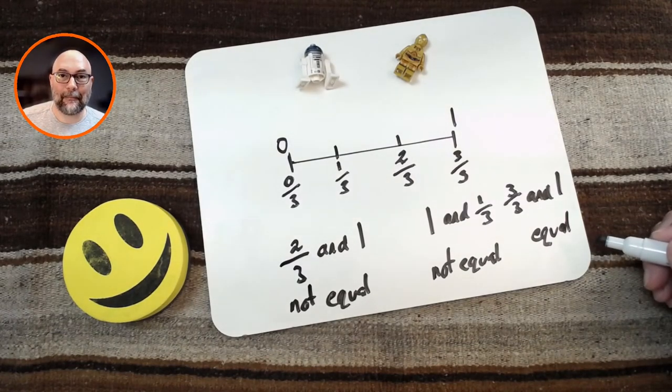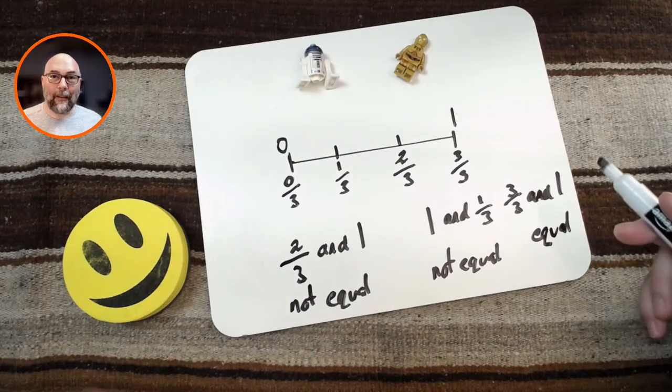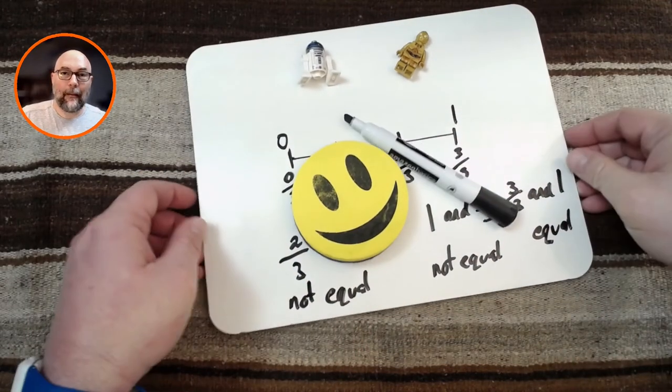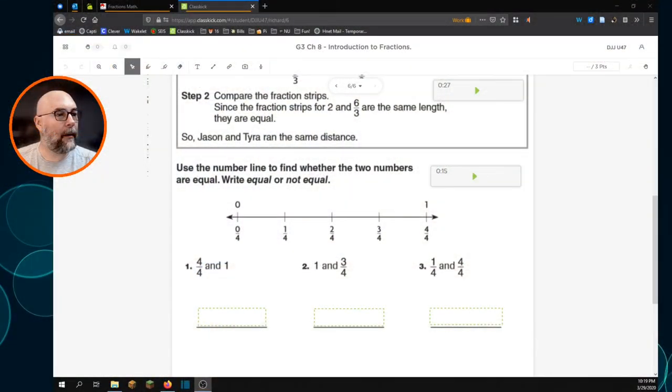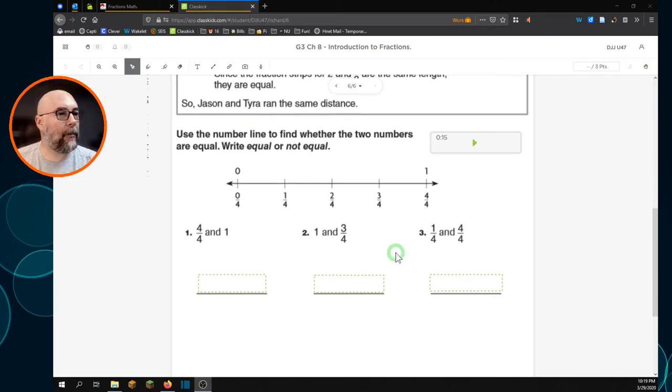Perfect. Now, let's look at this on the worksheet. On the worksheet, they are asking us to do exactly what we were just doing a minute ago on the whiteboard. So, I'm just going to do number 3 here for the fun of it. It says, use the number line to find whether the two numbers are equal. Write equal or not equal.